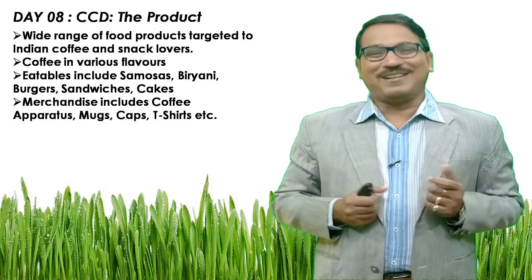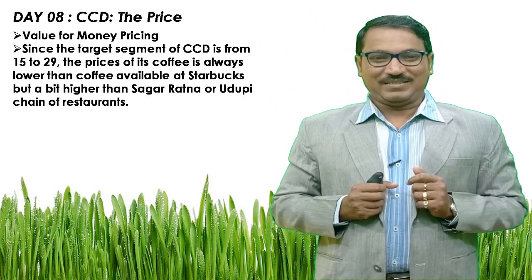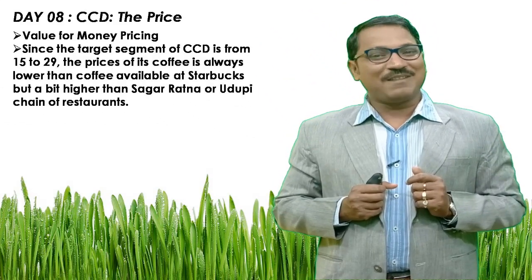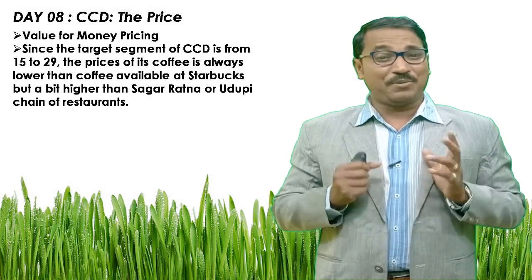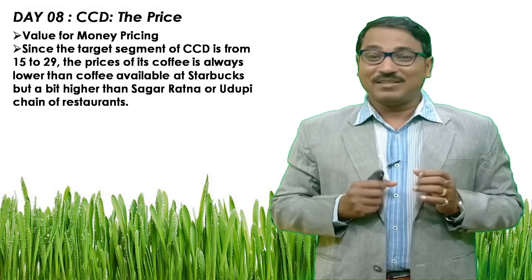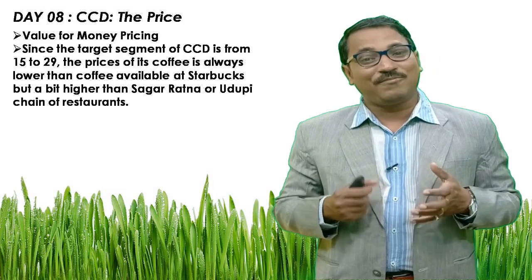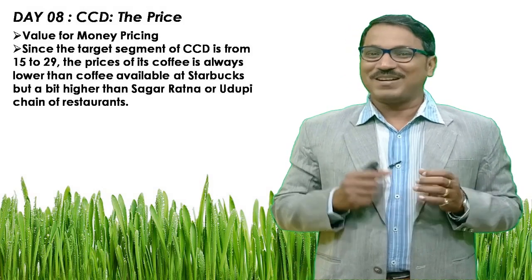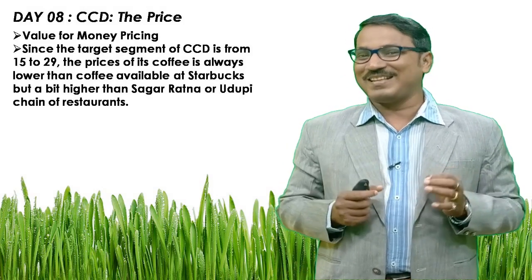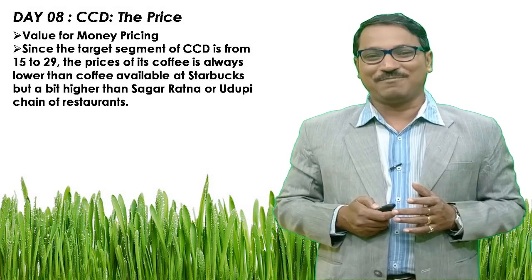The second P is price. Price is value-for-money pricing. Since the target segment of CCD is from 15 to 29 years, the prices of its coffee are always lower than coffee available at Starbucks but a bit higher than Sagar Ratna or UDP chain restaurants.